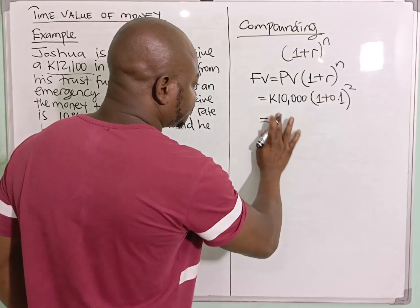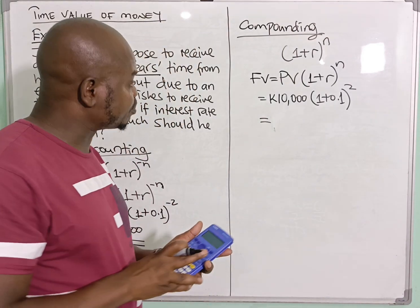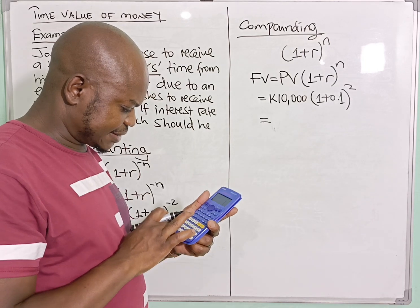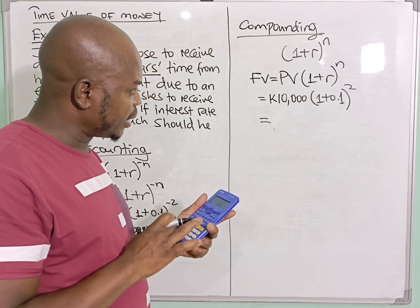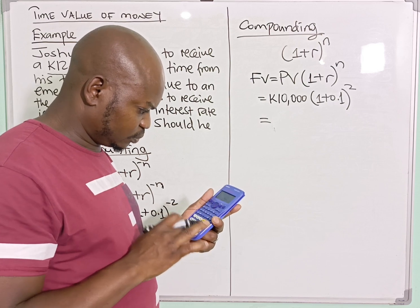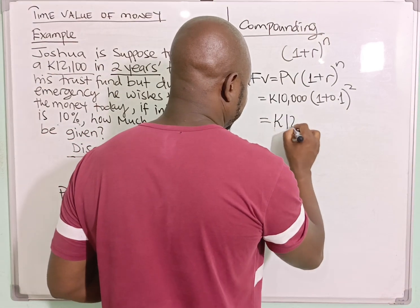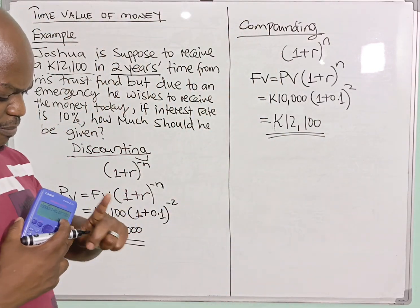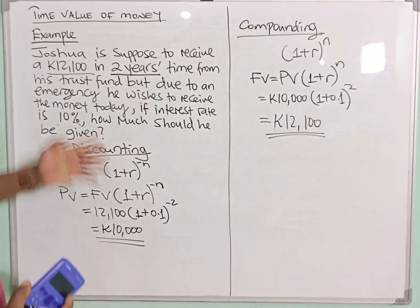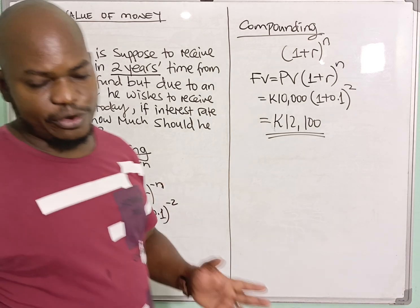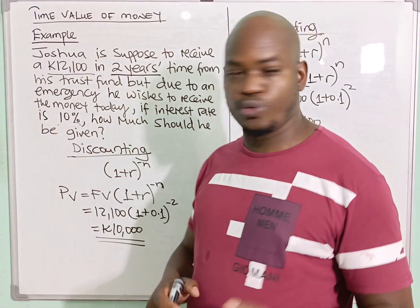So I've reversed the present value back into the future value. My main point was explaining how we find the present value given the future value through the process of discounting. Thank you so very much — I hope you enjoyed the tutorial.